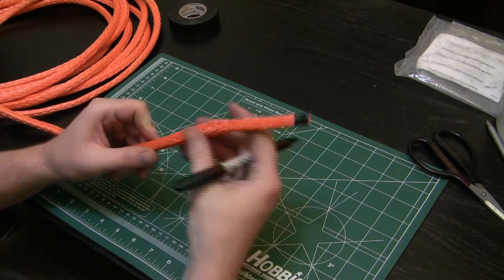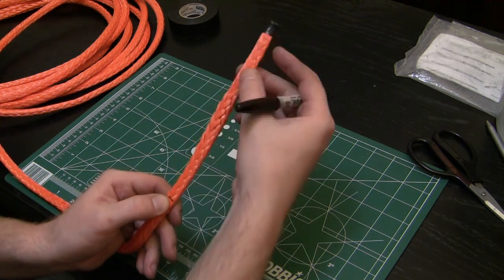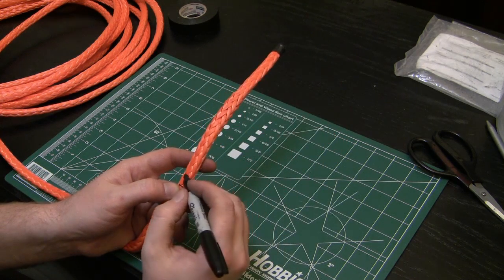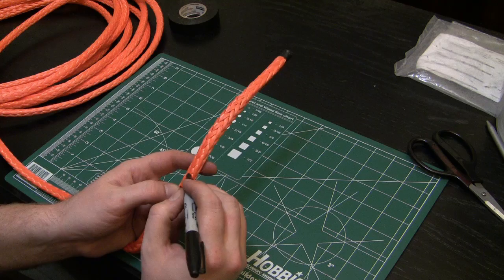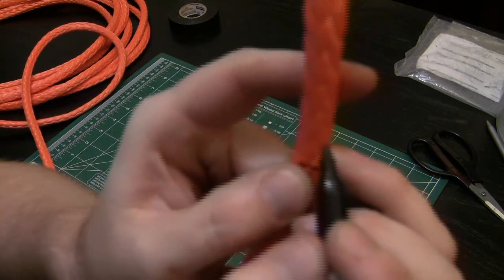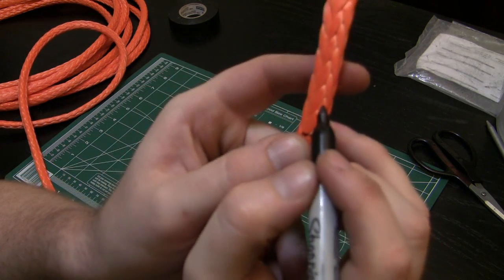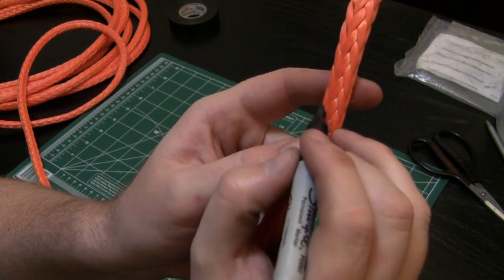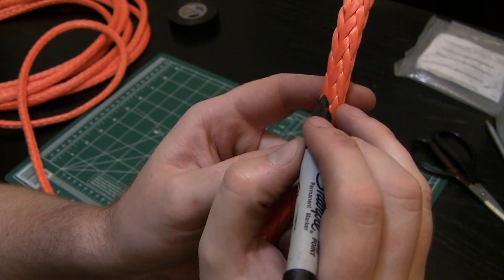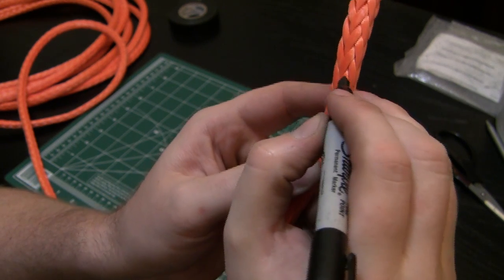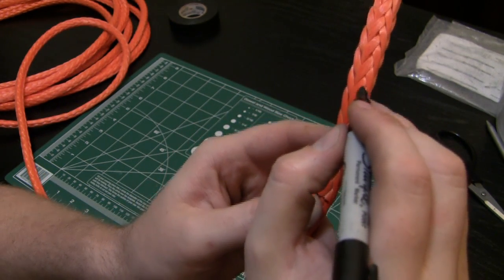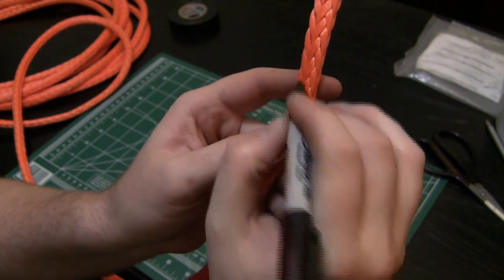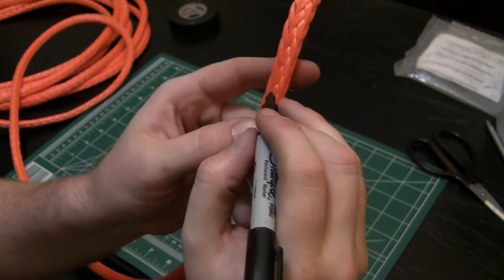This is 12-strand rope, so to get a 50% taper we need to remove six strands. From our mark one looking towards the end, we're going to mark six of the strands. You can see they land in this V pattern, so we're going to mark a V and then skip a V, then mark a V and skip a V. Three Vs on each side will give you six strands, so that will give you your 50% reduction.